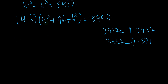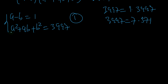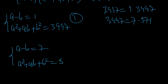From here we get two systems of equations. First case: a minus b equals 1 and a squared plus ab plus b squared equals 3997. Second case: a minus b equals 7 and a squared plus ab plus b squared equals 571.